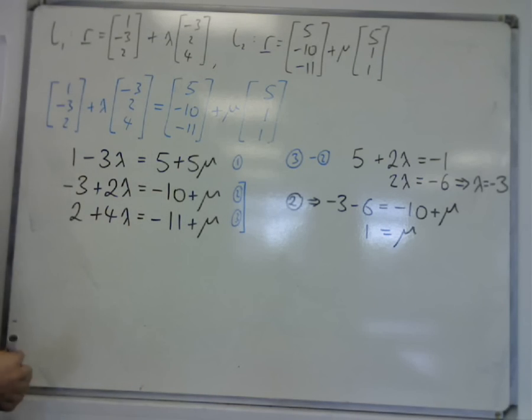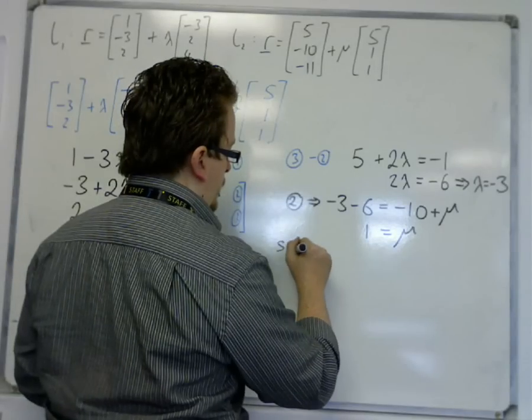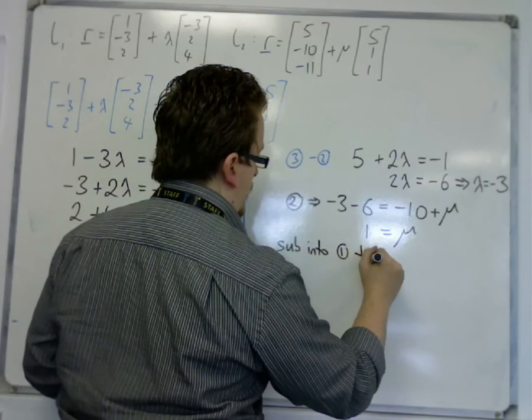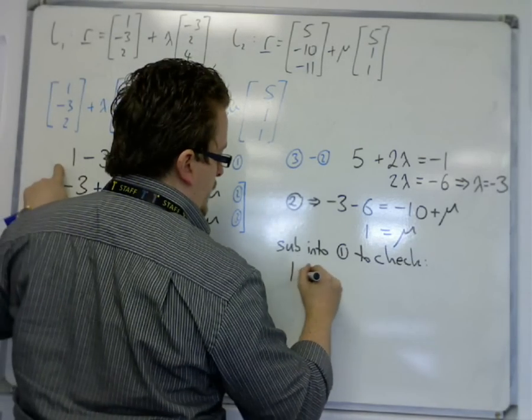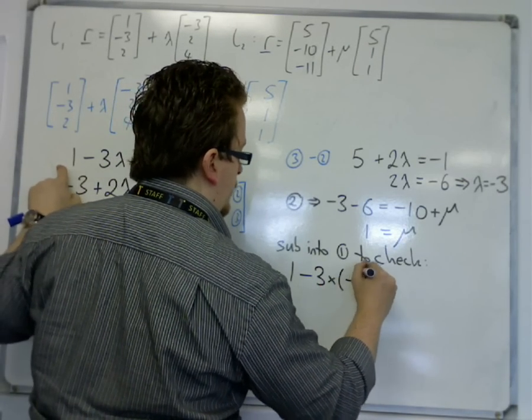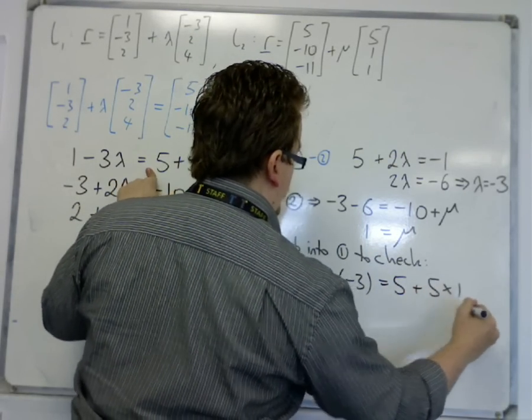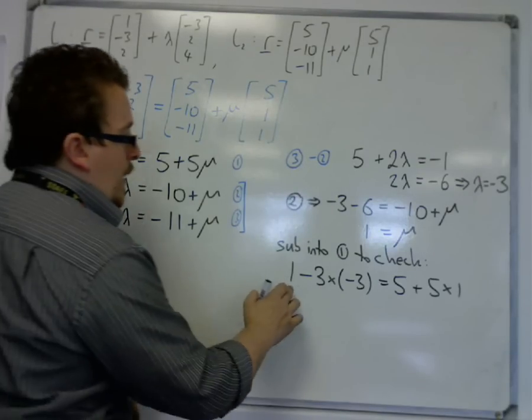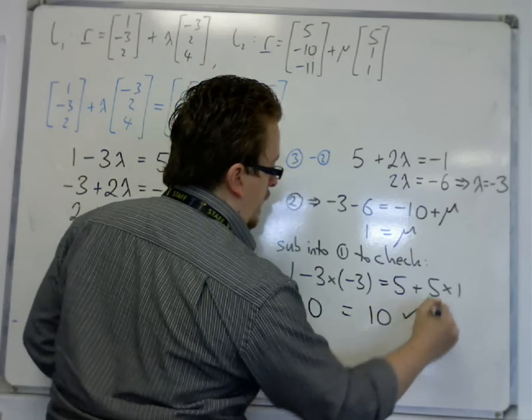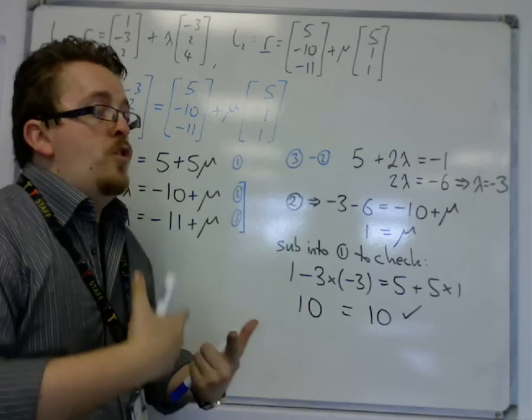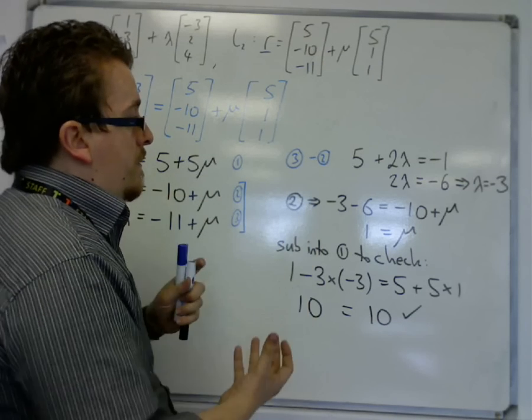So now that I have a lambda and a mu, I must then substitute both of those into equation 1 just to check. So I have 1 take away 3 lots of lambda, so 1 take away 3 times minus 3 is equal to 5 plus 5 lots of mu, which is 1. So I get 1 plus 9 is 10, and 5 plus 5 is also 10. So it works. So my lambda and mu works in the equation I didn't originally use. So that means that the two lines intersect.